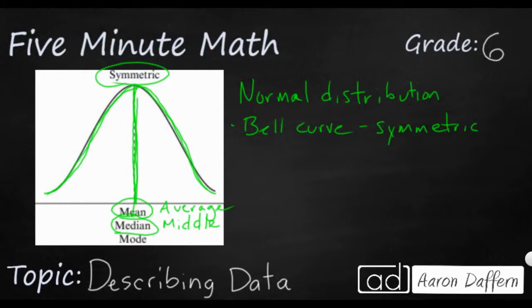This is where an outlier will really mess you up. You'll get one number that's really small or one number that's really big and that will mess up your median.